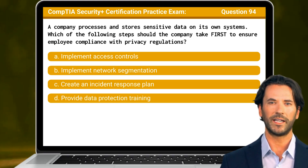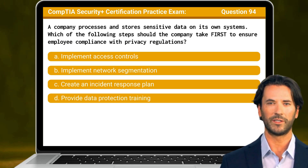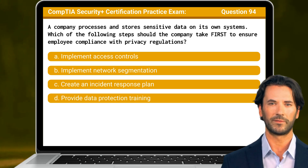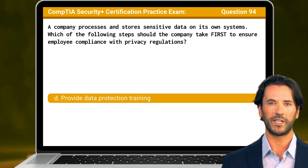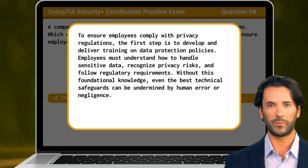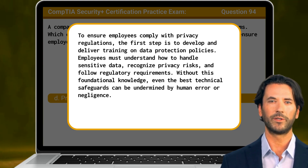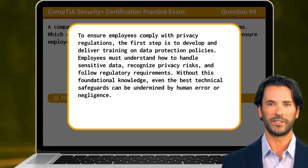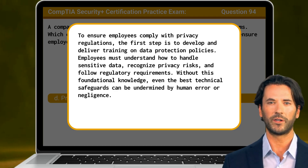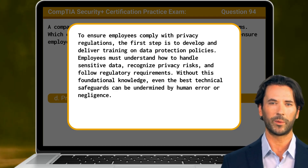Question 94: A company processes and stores sensitive data on its own systems. Which of the following steps should the company take first to ensure employee compliance with privacy regulations? The answer is D, provide data protection training. To ensure employees comply with privacy regulations, the first step is to develop and deliver training on data protection policies. Employees must understand how to handle sensitive data, recognize privacy risks, and follow regulatory requirements. Without this foundational knowledge, even the best technical safeguards can be undermined by human error or negligence.